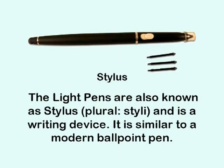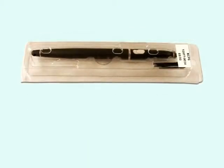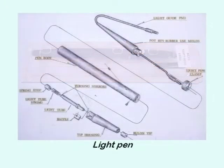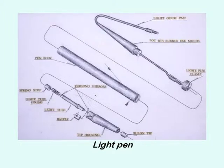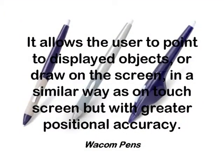Pen and Stylus. The light pens are also known as stylus and is a writing device. It is similar to a modern ballpoint pen. Light pen is also a computer input device in the form of light sensitive ray used with the computer monitor. It allows the user to point to displayed objects or draw on the screen in a similar way as on touch screen but with greater positional accuracy.